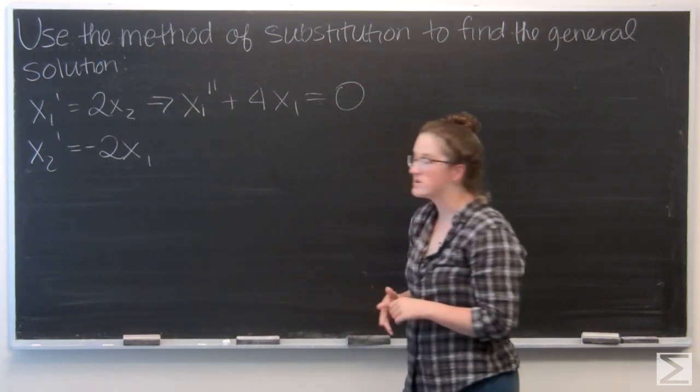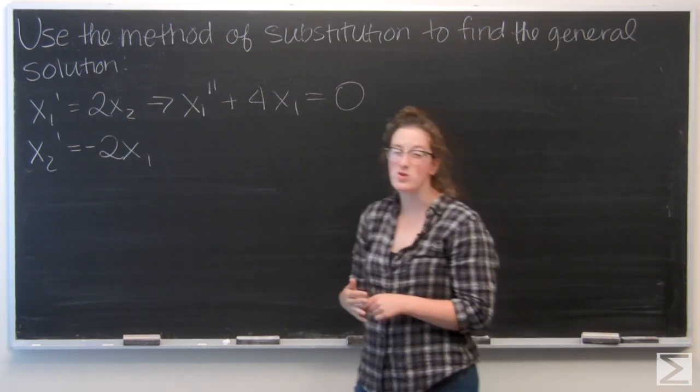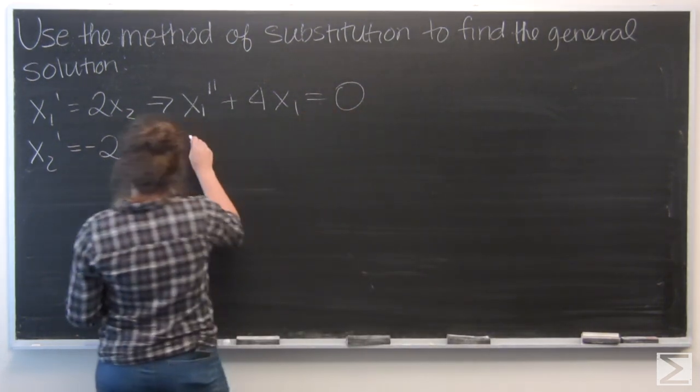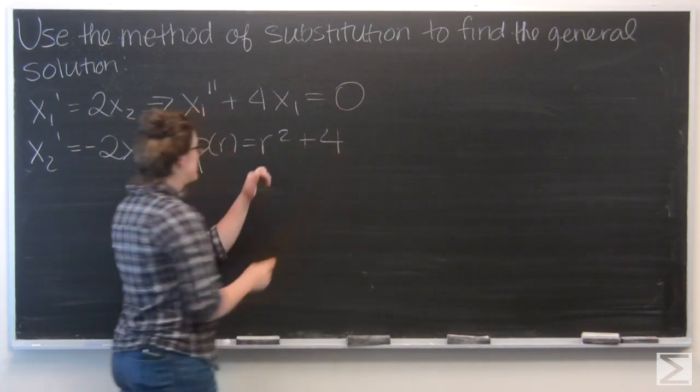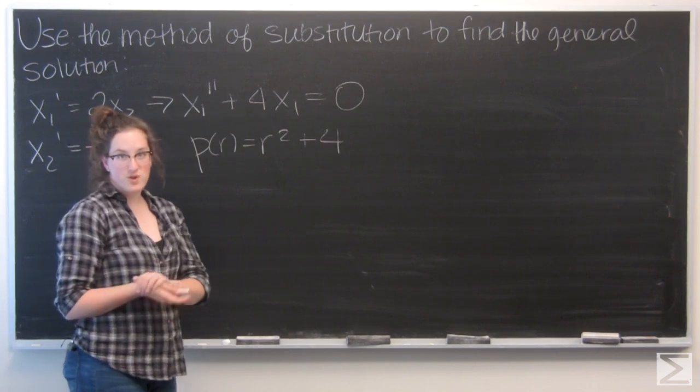From there, I want to write the characteristic equation, which is going to be r squared plus 4. And its roots are going to be plus and minus 2i.